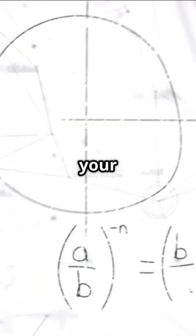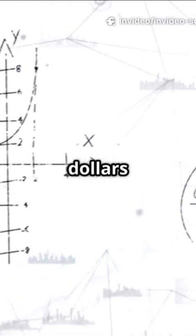With infinite compounding, your $1 grows to about $2.718. That's E.